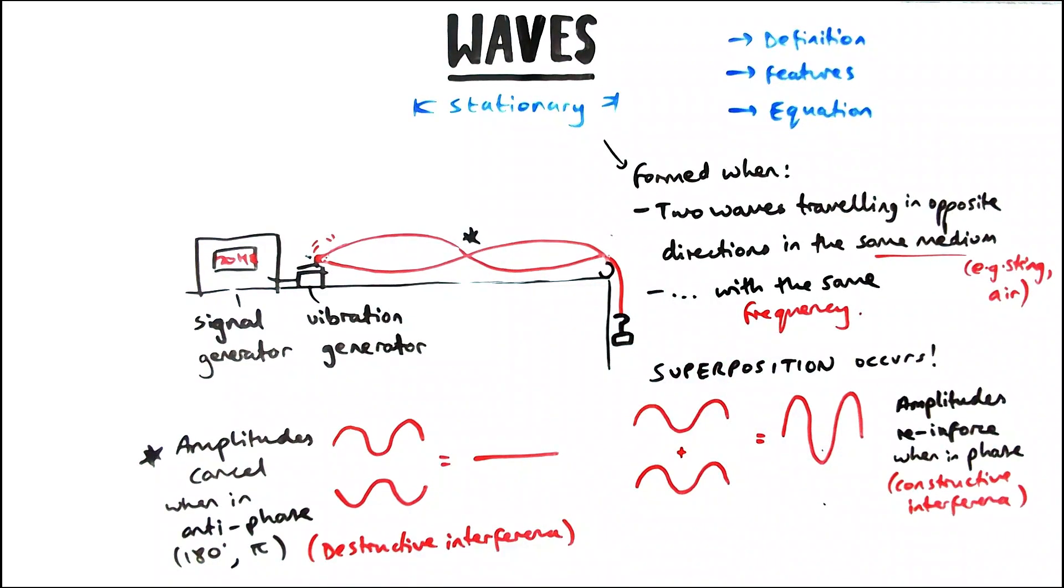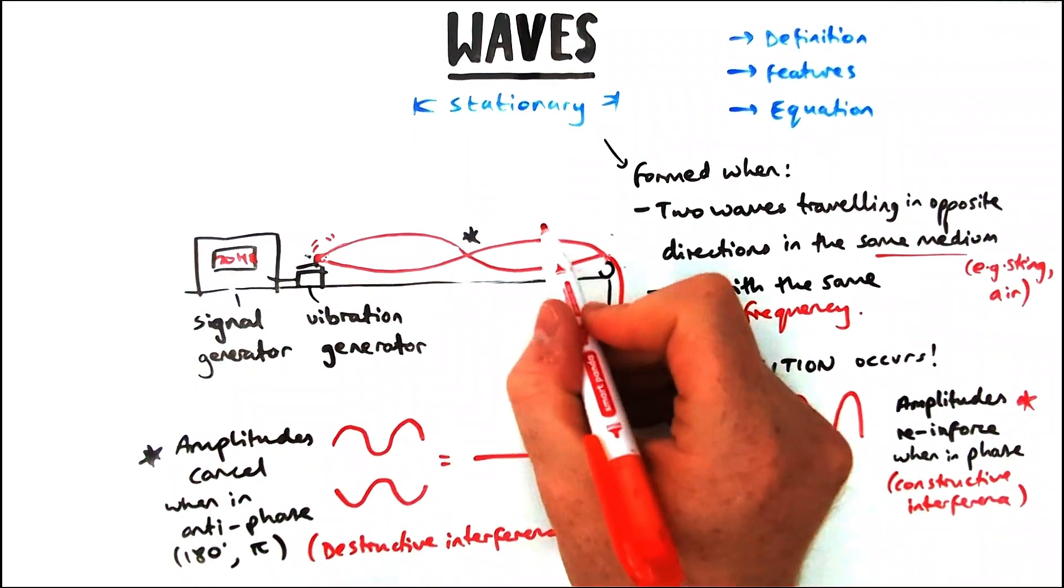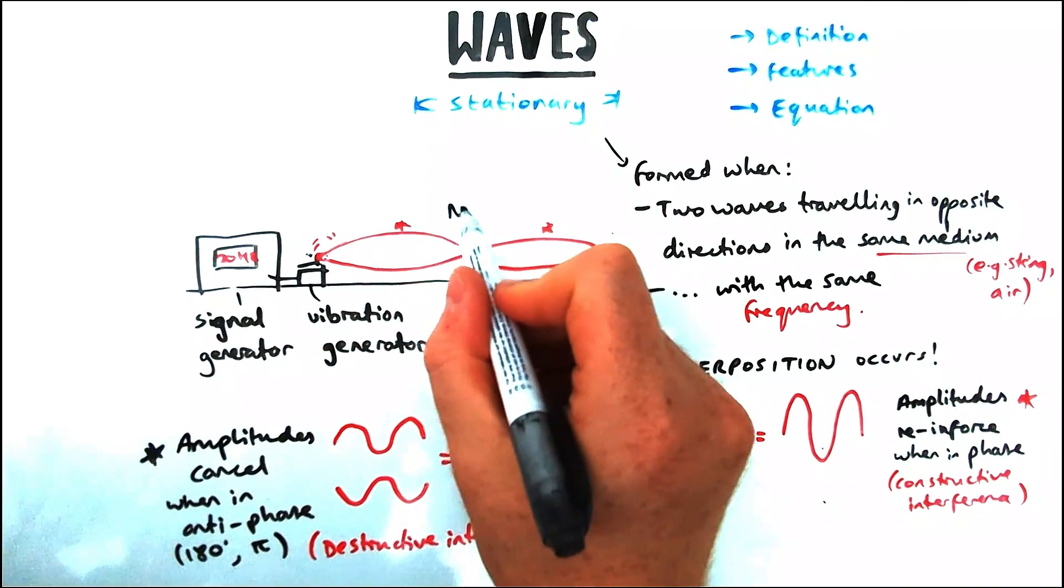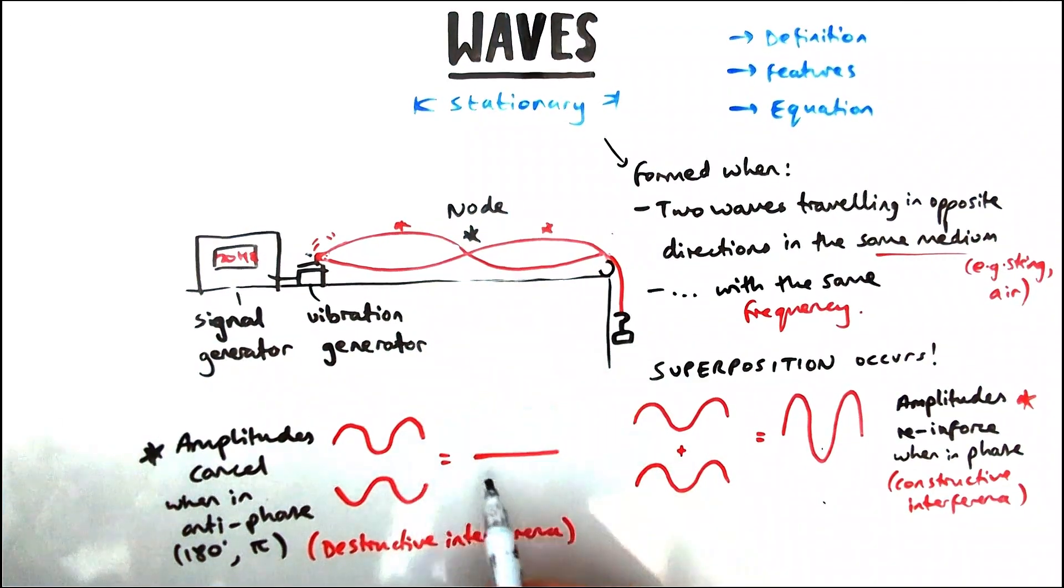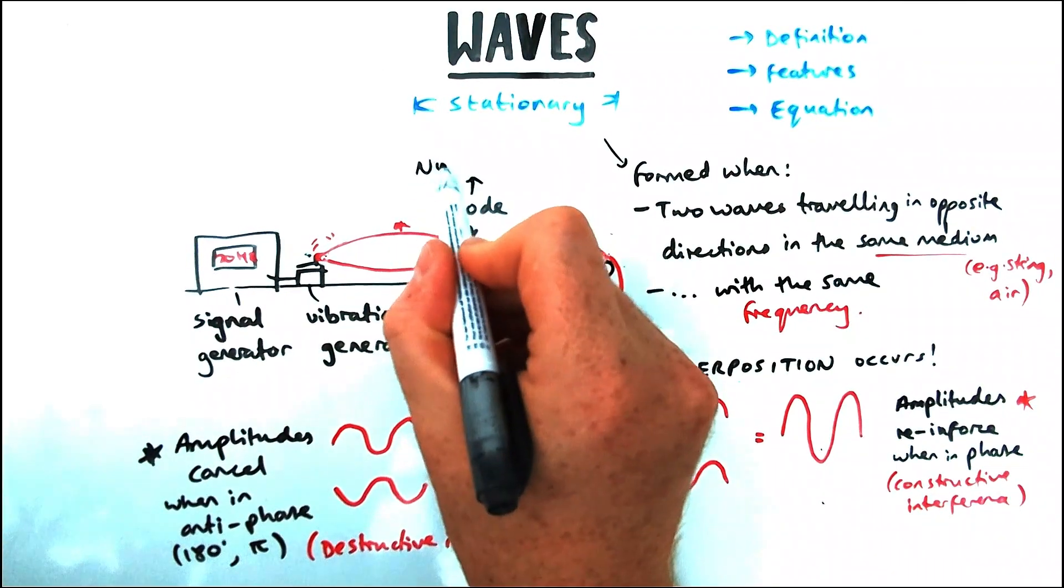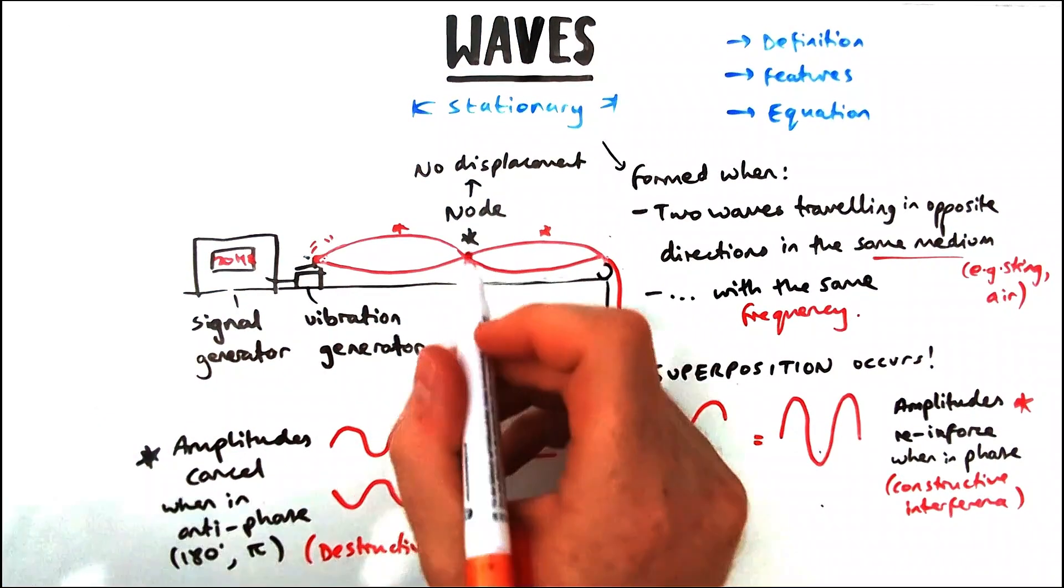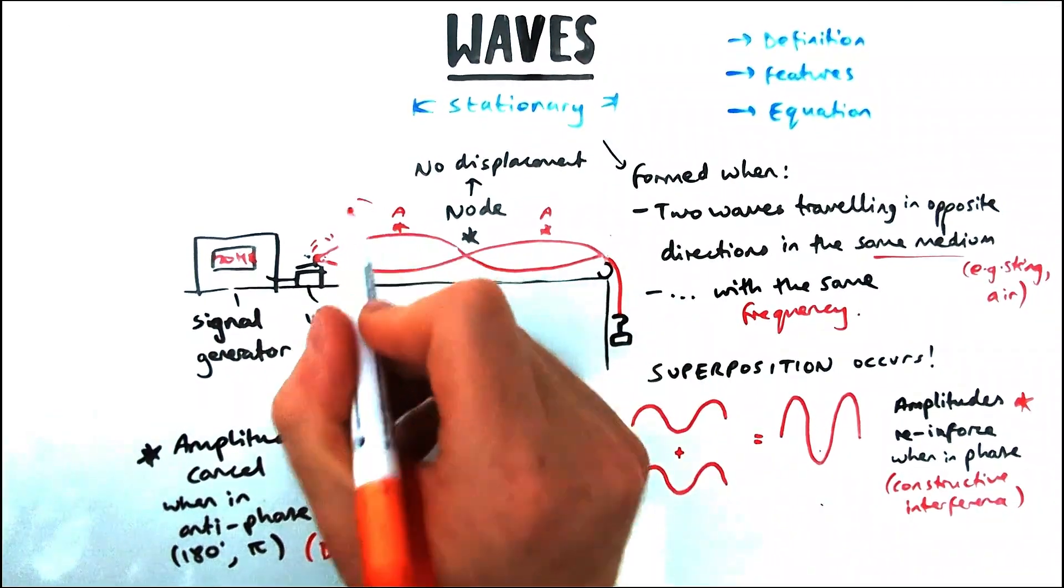That's why we get these different shapes. If I talk about the point in the middle where there's no amplitude at all, that is the point where there's destructive interference occurring because there's no amplitude. The wave's not moving. Whereas the points at either end are the opposite, they are reinforcing.